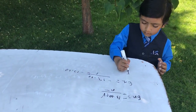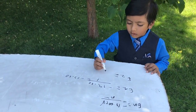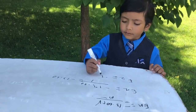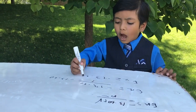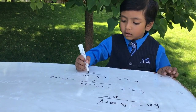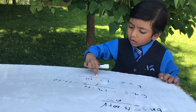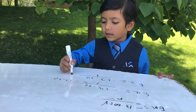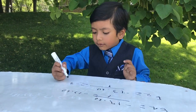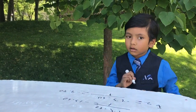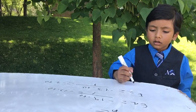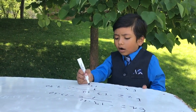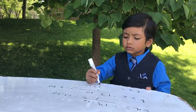So, E2 is equal to negative 13.60 over 2 squared, which is 4. So, that happens to be negative 3.40 eV.